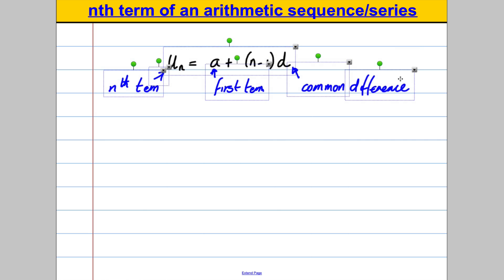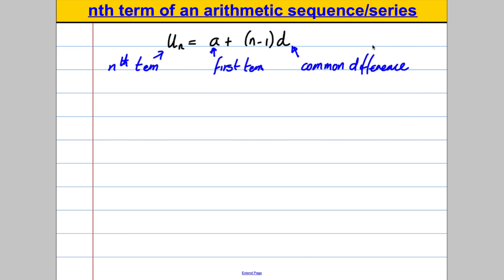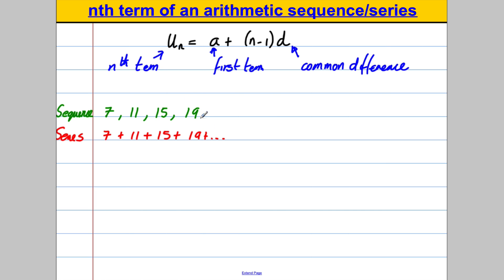I want to take a second to explain where this formula comes from, and I'll do it via an example. Suppose we had the sequence 7, 11, 15, 19 — in sequence form, or in series form: 7 + 11 + 15 + 19 + ... In this case, a is clearly the first term which is 7, and d is clearly what it's going up in, which is 4. So a is 7 and d is equal to 4.